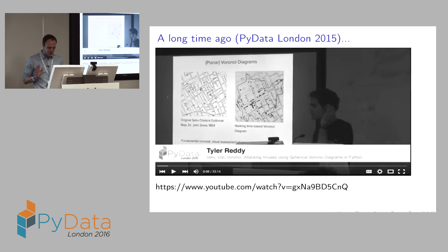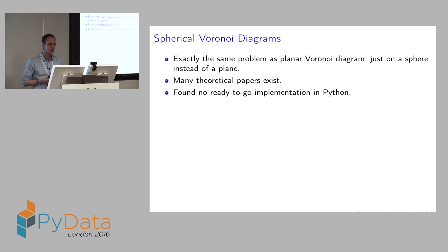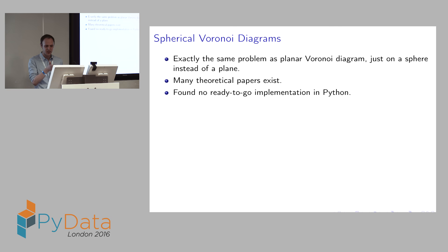Tyler also started by explaining planar Voronoi diagrams then moved on to spherical Voronoi diagrams, which he needed for his research — he's a postdoc at Oxford. He tried to solve the case of spherical Voronoi diagrams in Python as well, but at that time there was no ready-to-go implementation for spherical Voronoi diagrams in Python. He found a few theoretical papers on the topic, but sometimes these papers are very theoretical — they tell you a solution exists and estimate algorithm complexity, but extracting a practical implementation requires a lot of work.